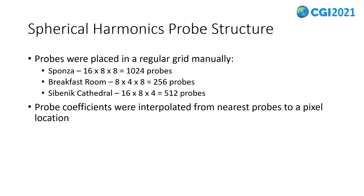Next, we discuss the probe structure and placement. Selecting probe counts for different scenes involves trade-offs. Too few probes lead to loss of detail in indirect lighting, whereas too many probes can be wasteful computationally, especially considering the limited expressiveness of the SH basis. For the Sponza scene, more probes were used due to the size of the scene and more changes in the albedo information. For Sibenik Cathedral and Breakfast Room, lower counts sufficed due to fewer color changes in materials. In final composition, nearest probes to a rasterized pixel's world position were interpolated to produce indirect lighting contributions, combined with the rasterized primary color and shadow map visibility. The probes were placed in a regular grid in each dimension. However, automatic probe placement schemes do exist which can reduce the number of probes needed, though probe placement is out of scope in this paper.